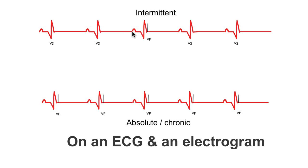However, on the next heartbeat we can see that the atria depolarizes, this is sensed by the pacemaker, it then starts its AV delay, but this time it hasn't registered that a ventricular depolarization has occurred. So what does it do? It tries to trigger a depolarization itself.